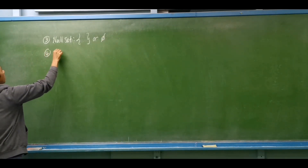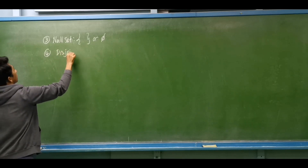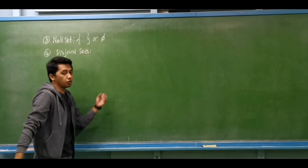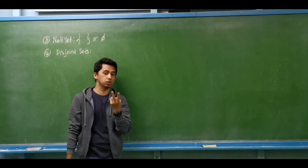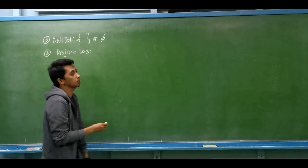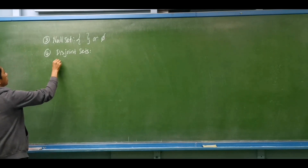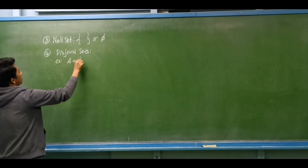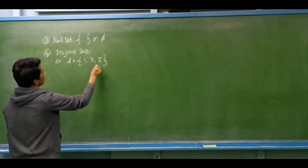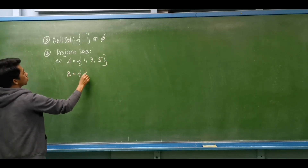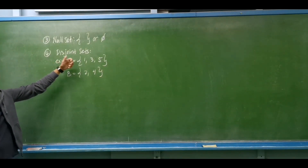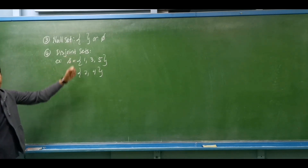Number four: we have the disjoint sets. For disjoint sets, we are considering two sets. If we have disjoint sets, these two sets have no common element. For example, we have set A with elements 1, 3, and 5. Then set B with elements 2 and 4. We have two sets but no common element — that is disjoint sets.